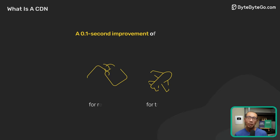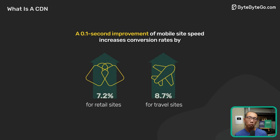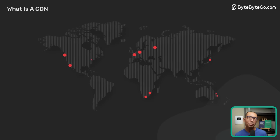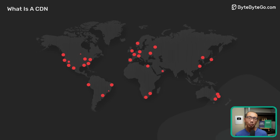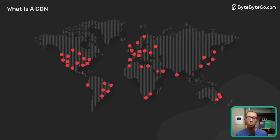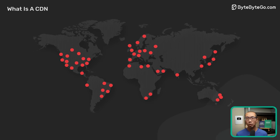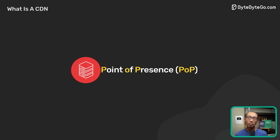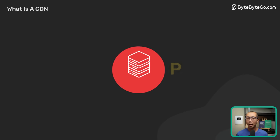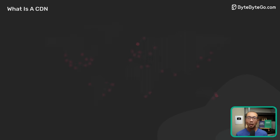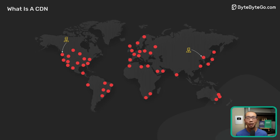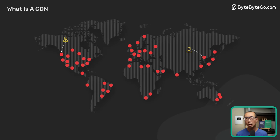It is well documented that performance is critical to user engagement and retention. To bring a service closer to the users, CDNs deploy servers at hundreds of locations all around the world. These server locations are called points of presence, or POPs. A server inside the POP is now commonly called an edge server. Having many POPs all over the world ensures that every user can reach a fast edge server close to them.